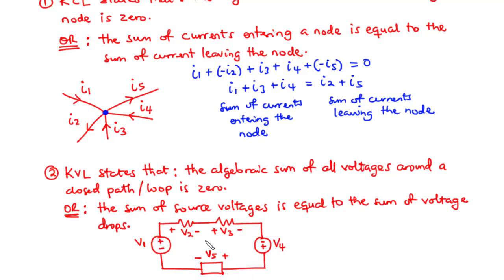We are going to take the clockwise direction and consider the voltages around the loop. For the voltages, whenever we have a current leaving the positive terminal, the voltage component is positive. If we have current leaving the negative terminal, the voltage component is negative. Going around the loop in the clockwise direction, for v1 we have current leaving the positive terminal.